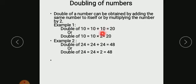10 into 2, it becomes 20. If you want to make 24 double, 24 plus 24 becomes 48. 24 into 2 becomes 48. Understood children? If you want to make it double, you have to add the same number or multiply by 2. Then you will get the double number.